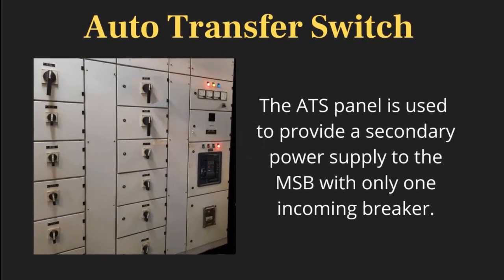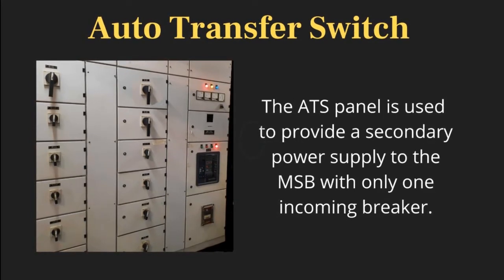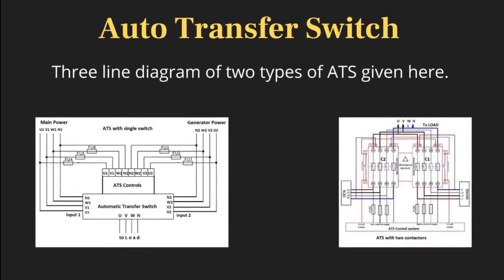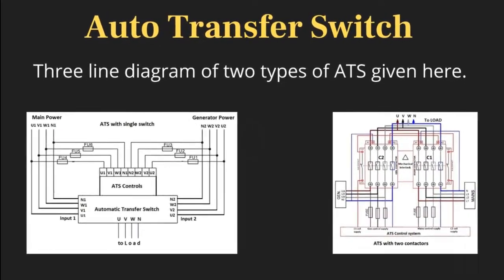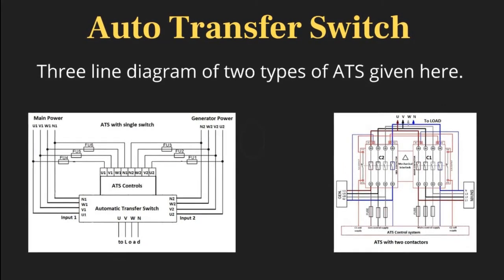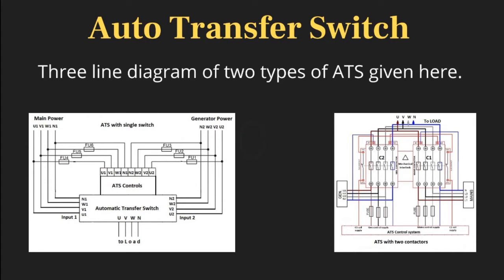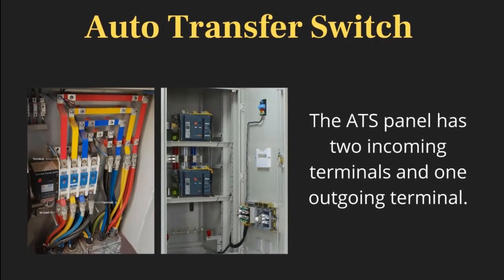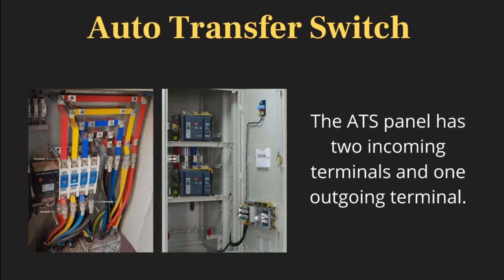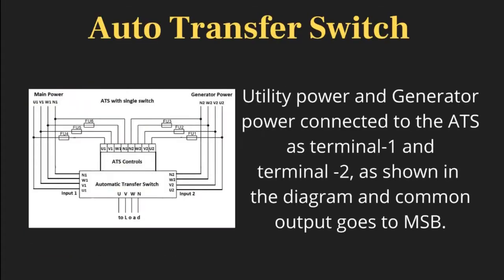The ATS panel is used to provide a secondary power supply to the MSB with only one incoming breaker. A three-line diagram and pictures of two types of ATS are given here. The ATS panel has two incoming terminals and one outgoing terminal. Utility power and generator power are connected to the ATS as terminal 1 and terminal 2, and the common output goes to the MSB.